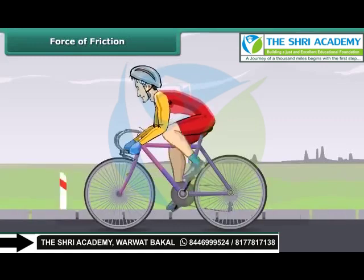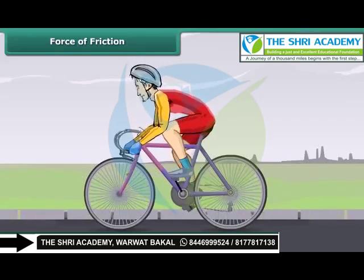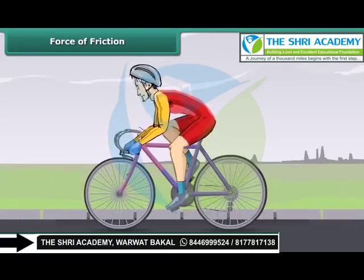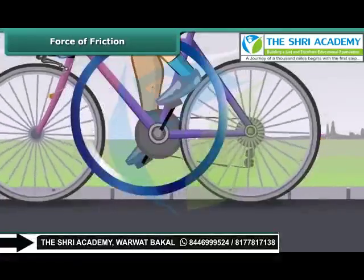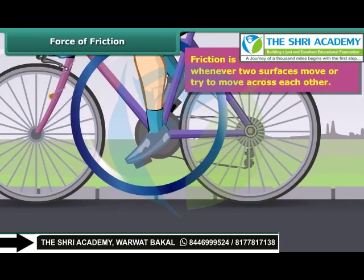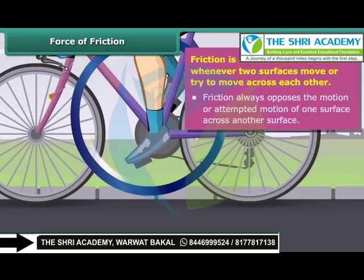Let's take an example from daily life. While moving on a bicycle on the road, you pedal the bicycle and it moves on and on. When you stop pedaling, the bicycle slows down and gradually comes to a stop. Why does this happen? This actually happens because of friction. Friction is a force that is created whenever two surfaces move or try to move across each other.